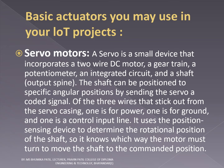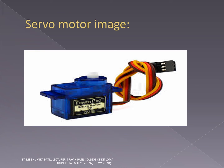The basic actuators used in IoT projects are servo motors, stepper motors, solenoids, relay, etc. First, we are going to see about servo motors. A servo is a small device that incorporates a two-wire DC motor, a gear train, a potentiometer, an integrated circuit, and a shaft output spine. The shaft can be positioned to specific angular positions by sending the servo a coded signal. Of the three wires that stick out from the servo casing, one is for power, one is for ground, and one is a control input line. It uses the position sensing device to determine the rotational position of the shaft, so it knows which way the motor must turn to move the shaft to the commanded position. This is the picture of servo motor used in IoT devices.